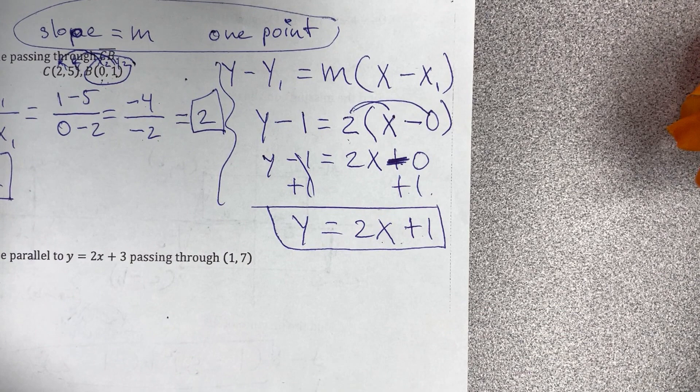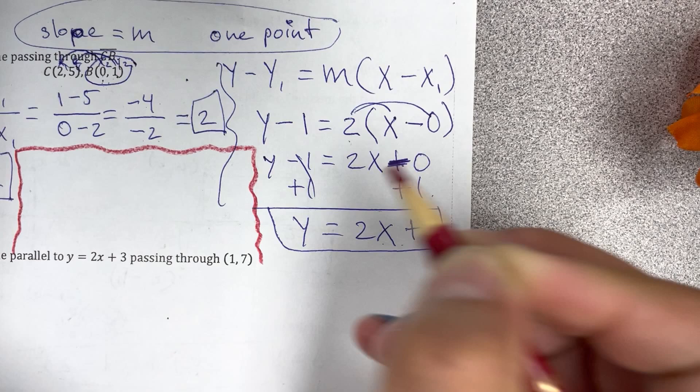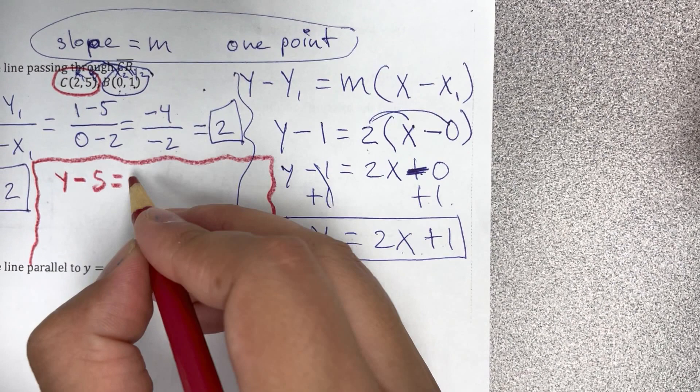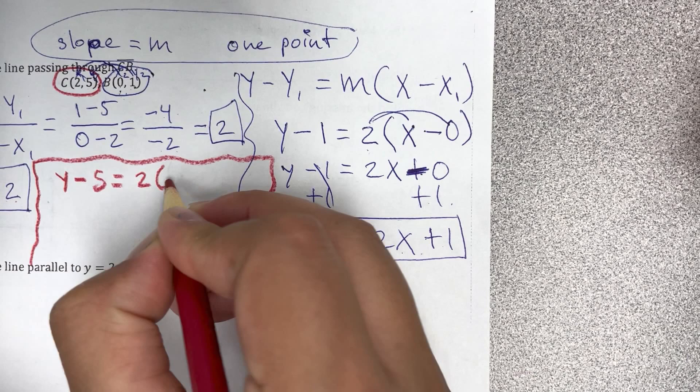Déjenme lo hacer, déjenme hago con el otro punto nada más para que vean que sí sale lo mismo. Now I'm going to choose point C and so it's going to be y minus y1, which is 5, equals m, que sería el que encontramos acá, 2 times x minus the x, which is a 2.